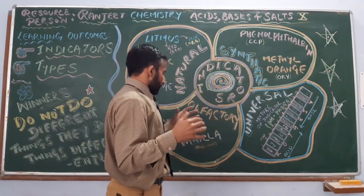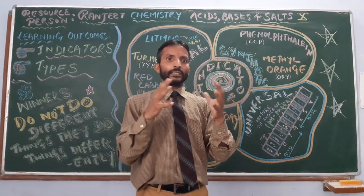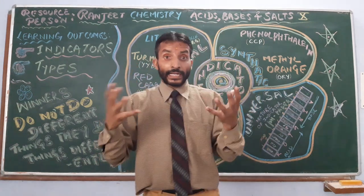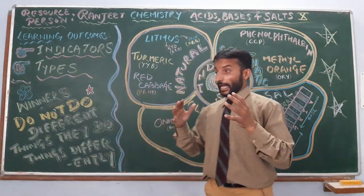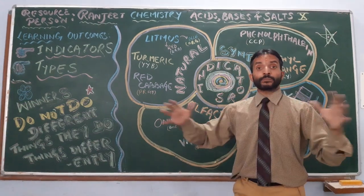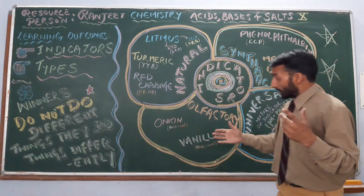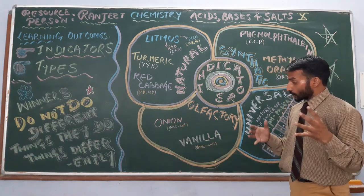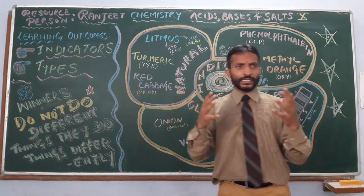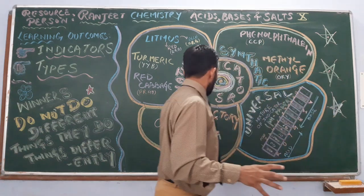Clove, onion, and vanilla can all be used as olfactory indicators because they change their fragrance in acid and base. Onion in acidic medium preserves its fragrance as it is, but in basic medium it loses its fragrance. Vanilla also in base loses its fragrance, but in acid it remains as it is.